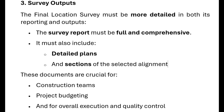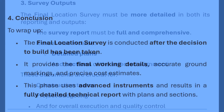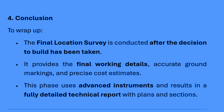The report must also include detailed plans and sections of the selected alignment. These documents are crucial for construction teams, project budgeting, and overall execution and quality control. To wrap up, the final location survey is conducted after the decision to build has been taken. It provides the final working details, accurate ground markings, and precise cost estimates. This phase uses advanced instruments and results in a fully detailed technical report with plans and sections. That concludes our lecture on the four major types of railway surveys: Traffic, Reconnaissance, Preliminary, and Final Location Surveys. Thank you.